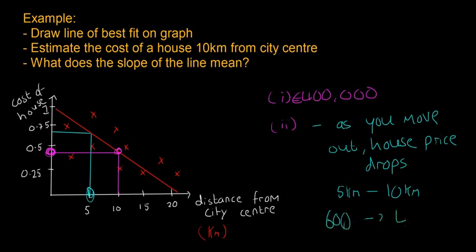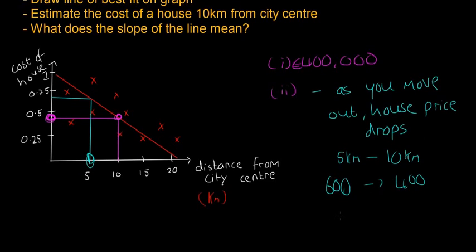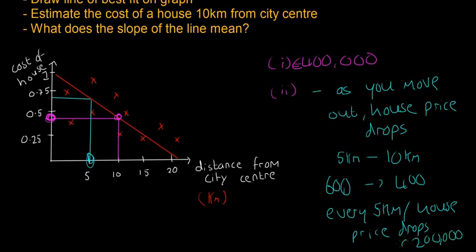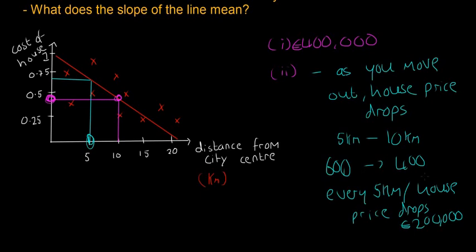So you can see that as it moves from 5 kilometers to 10 kilometers, the house price decreases from 600 to 400, so that means for every 5 kilometers, house price drops by 200,000 euro. So again, this is all a very rough estimate, there is no graph paper here, so it's kind of hard to tell, but if they ask you a question like that, that's an answer you have to give. You have to give, for every 5 kilometers, how much the house price drops. That's what the question means when it says, what does the slope of the line mean?